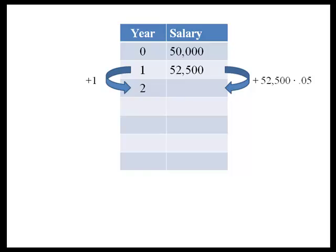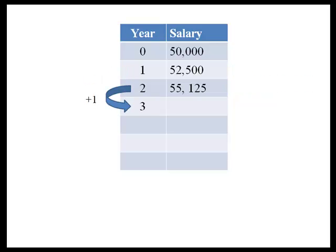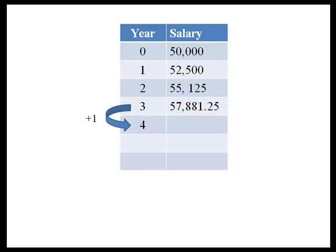After another year, we get 5% of our new amount of $52,500, so we actually get a larger raise than the year before, to give us a total of $55,125. After another year, we get a raise of 5% on the $55,125 and we get a total of $57,881.25. So each year we go up, we're getting an increase of 5% on what we made the year before.